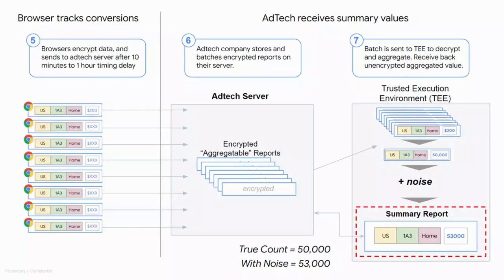Now that we have seen the creation of one aggregate report in practice, an ad tech would most likely receive many of these encrypted aggregatable reports from various browsers as users go through the flow of seeing an ad and then converting. The ad tech can store these encrypted aggregatable reports on their servers, as seen in the middle column. The ad tech can then decide how they want to batch these reports — for example, daily, weekly, monthly, or other ways as well. They would then send a batch of aggregatable reports to the aggregation service or trusted execution environment.